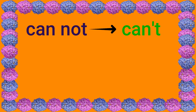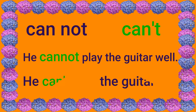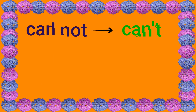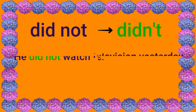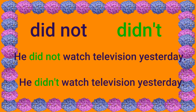He cannot play the guitar well — he can't play the guitar well. Did not can be read as didn't. He did not watch television yesterday — he didn't watch television yesterday.